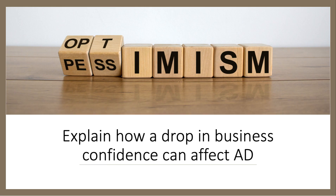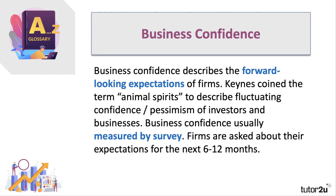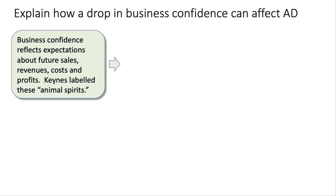Here's the third example: explain how a drop in business confidence can affect aggregate demand. Business confidence is often measured using surveys trying to capture the expectations — what Keynes called the animal spirits — of entrepreneurs and businesses, and of course that confidence ebbs and flows. Firms are typically asked about the next six to twelve months: what's going to happen to your orders, your exports, your jobs, your profits? Business confidence essentially reflects expectations about the future.